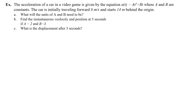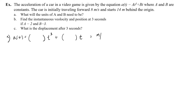Let's do another example. The acceleration of a car in a video game is given by a equals a·t cubed plus b·t, where a and b are constants. The car is initially traveling forward 8 meters per second and starts 14 meters behind the origin. Part a: What will the units of a and b need to be? Since acceleration has units of meters per second squared, and t has units of seconds, we need a and b to make the units agree.